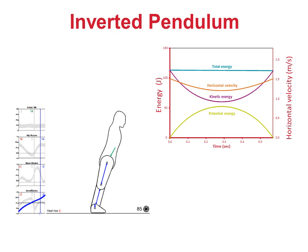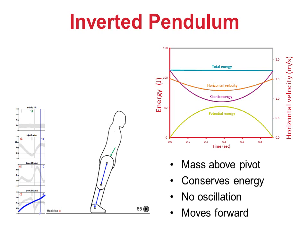In summary, in an inverted pendulum, the mass is above the pivot. The mechanism conserves energy, but there is no oscillation and hence no specific natural frequency. Most important for all, the inverted pendulum is an energy conserving mechanism that allows a mass to be moved forwards.